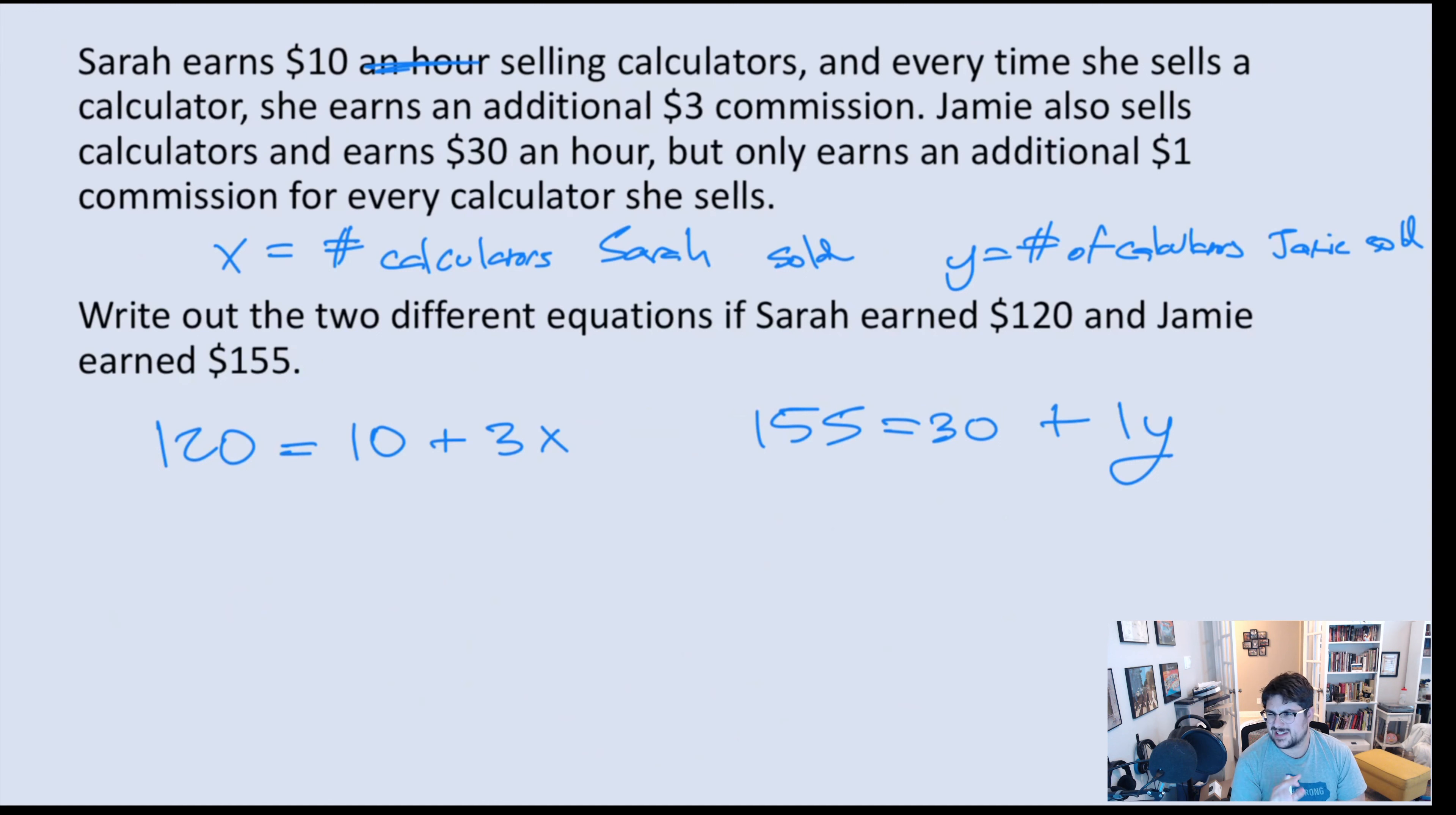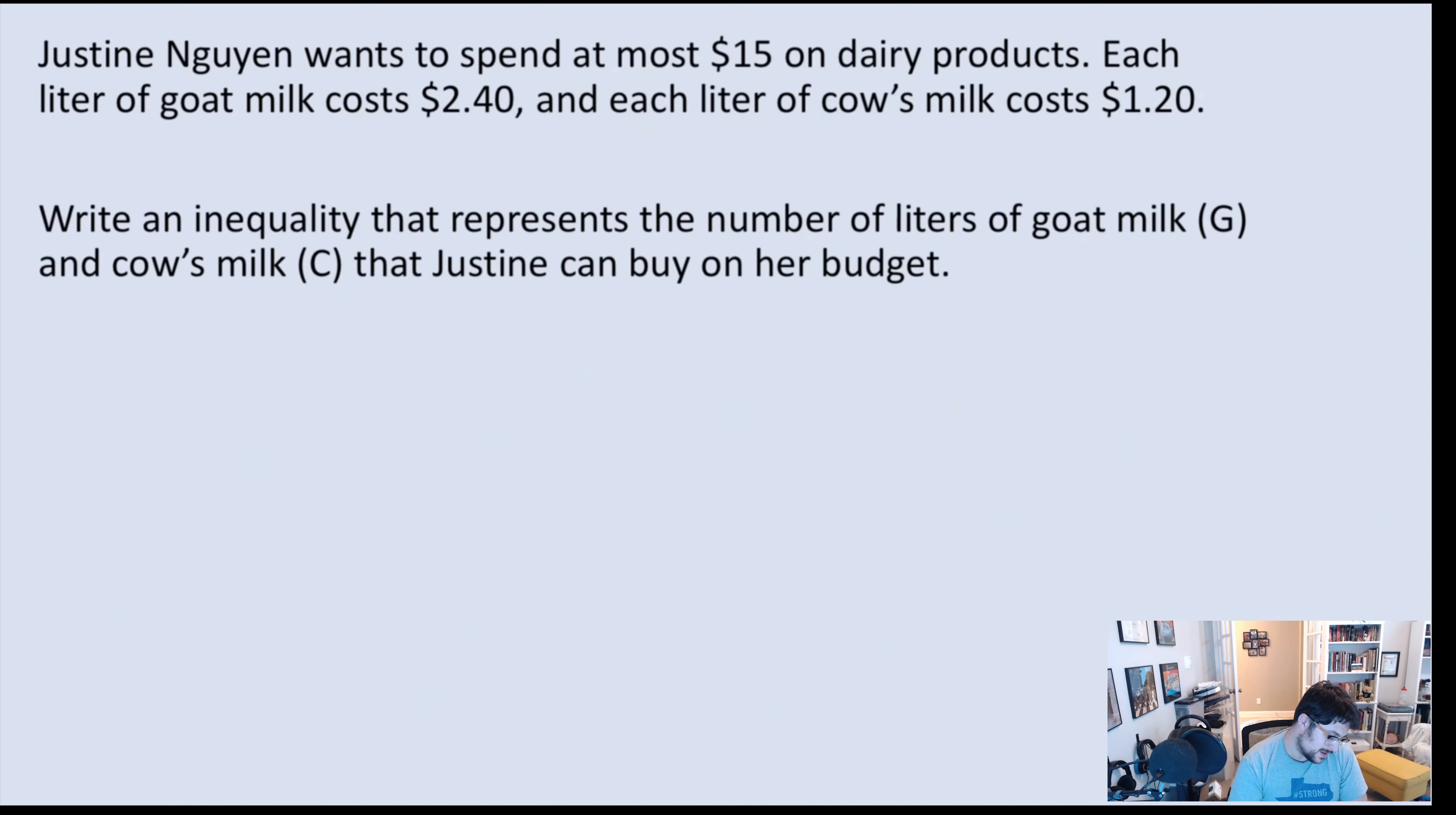So let's just say $10 that she gets plus $3 per calculator that she sold. Jamie earns $155, she got that $30 plus 1 times the number of calculators she sold. That could work. This isn't the best problem. I actually don't like this one very much. But we can make this thing work. That would be stuff we could solve for.